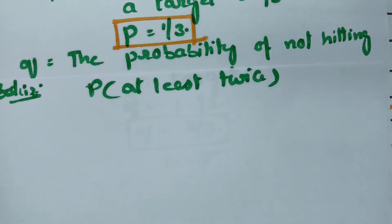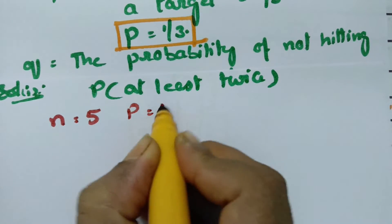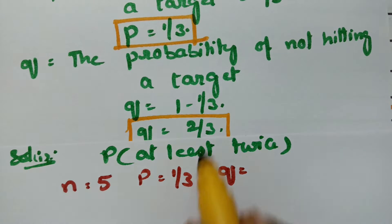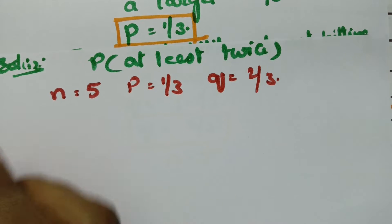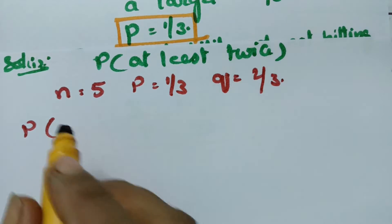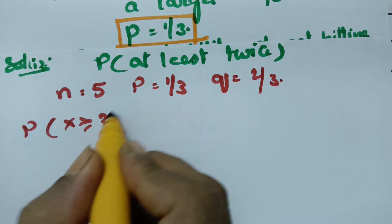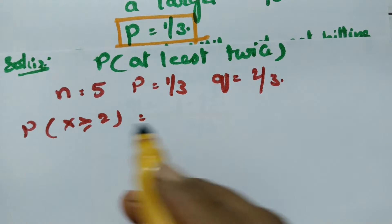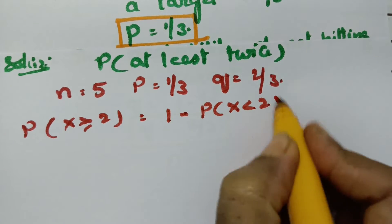Here n is equal to 5, P is equal to 1 by 3, and Q is equal to 2 by 3. I have to calculate the probability of at least twice — minimum twice, maximum till 5. So instead of adding for X=2, 3, 4, and 5, I am subtracting: 1 minus probability of X less than 2.